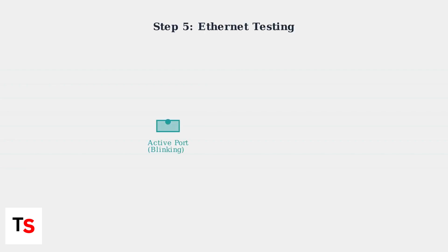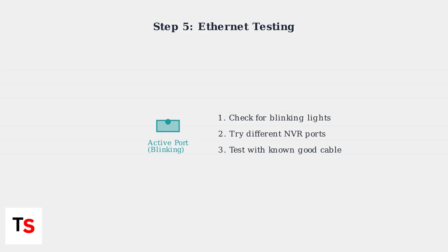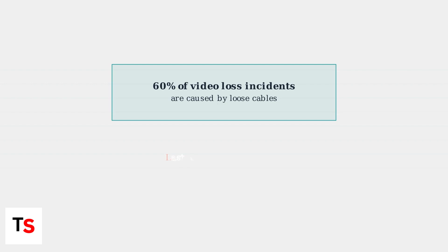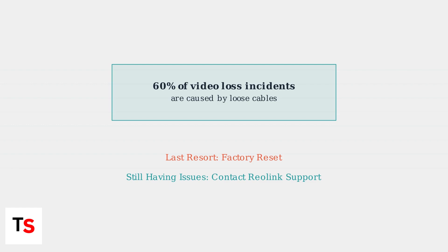For Ethernet connections, check if the cable adapter is blinking on both ends, indicating data transmission. Try different ports on your NVR or DVR if one port isn't working. Remember, loose cables account for about 60% of video loss incidents. If all troubleshooting steps fail, try a factory reset as a last resort or contact Reolink support for professional assistance.